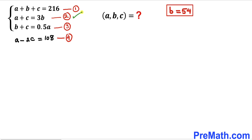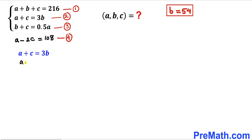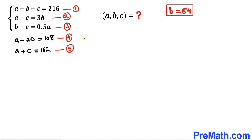Let's focus on equation two: a plus c equals 3 times b. We know b is 54, so replacing that gives a plus c equals 3 times 54, which means a plus c equals 162. I will label this as equation number five.